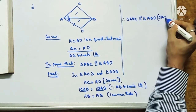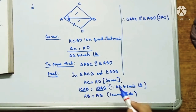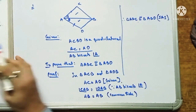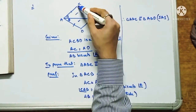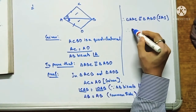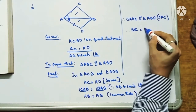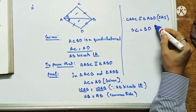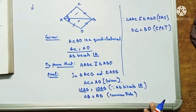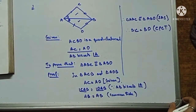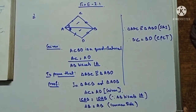Since these two triangles are congruent, for the second part of the question — what can we say about BC and BD? Since triangle ABC is congruent to triangle ABD, therefore BC equals BD by CPCT (Corresponding Parts of Congruent Triangles). I hope you understood; moving to question number two.